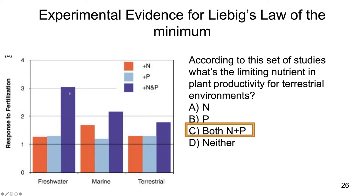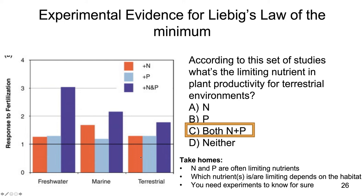Important take-homes: nitrogen and phosphorus are often limiting nutrients for plant environments. Which nutrients are limiting depends on the habitat type — for example, in marine environments, nitrogen itself appears to be a little more limiting than phosphorus. And you need experiments to know for sure, because without experimentally adding these nutrients, we can't know whether the limiting nutrient is nitrogen, phosphorus, or a combination.